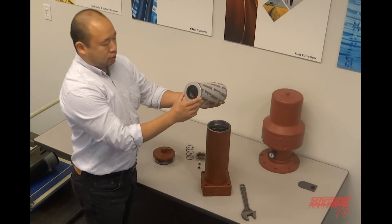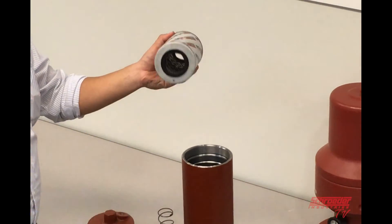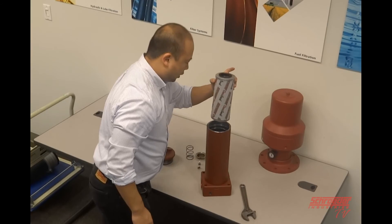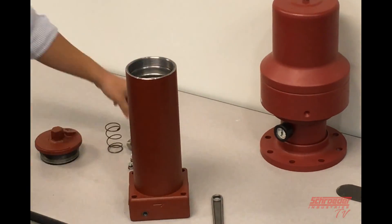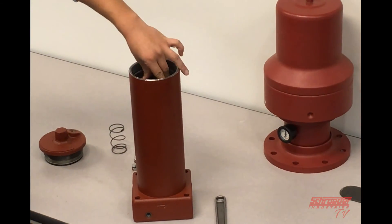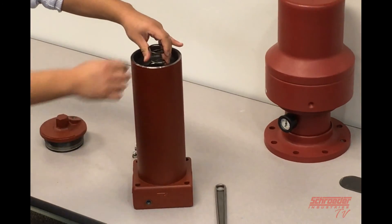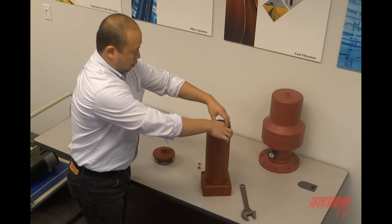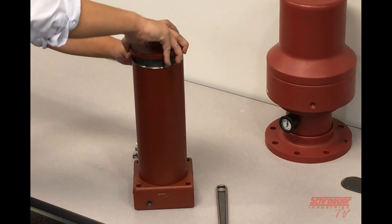And you just want to make sure the orientation of the GLC grommet is sitting correctly with the fitting inside. Just a firm push. And then we carefully put the cap inside the grommet and the spring inside the cap.